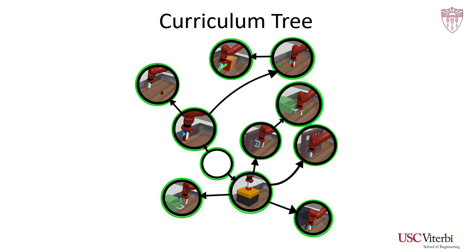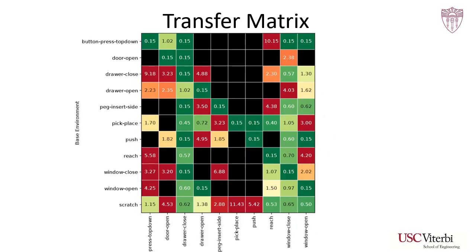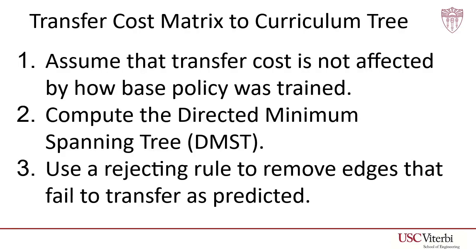In order to find an efficient curriculum tree, we begin by computing something we call the transfer cost matrix, which measures the number of time steps required to acquire each target task from each base task, as well as the number of time steps required to acquire each task from scratch. In this visual representation of the transfer cost matrix, black cells never finish transferring. To convert the transfer cost matrix to an optimal curriculum tree, we assume the transfer cost is not affected by how the base policy was trained. We compute the directed minimum spanning tree on a fully connected graph, using the values of the transfer cost matrix as edge weights.